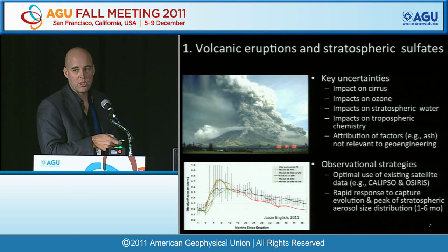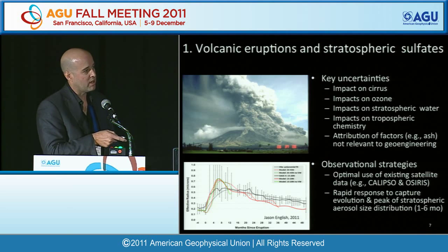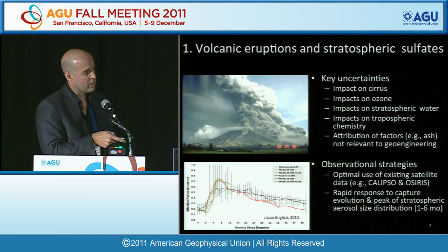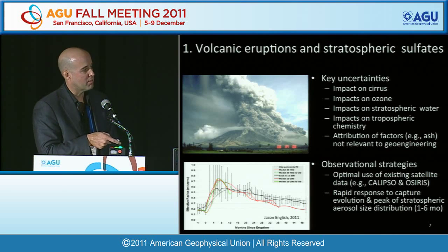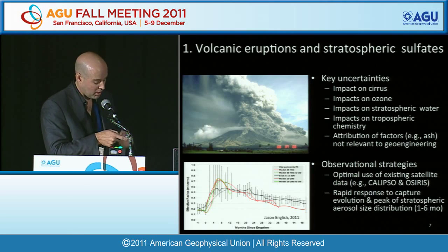On observational strategies, one thing that comes out of the study is perhaps more optimal use of existing satellite remote sensing data — the CALIPSO LIDAR mission and the OSIRIS limb sounder for going back and looking at past events. Also looking at strategies for rapid response to massive eruptions to capture both the evolution and peak of the aerosol size distribution. One example shows peak happening within three to six months, implying rapid response capabilities from surface and airborne instruments.